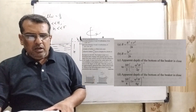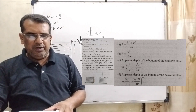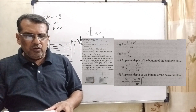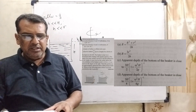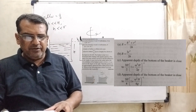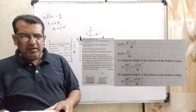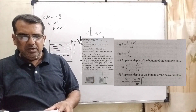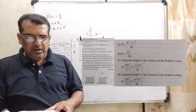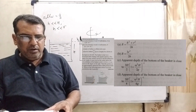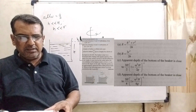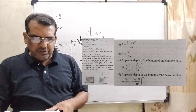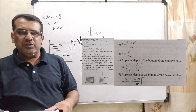Now here is the question. A beaker of radius small r is filled with water of refractive index 4/3 up to a height capital H, as shown in the figure. The beaker is kept on a horizontal table rotating with angular speed omega. This makes the water surface curve so that the difference in height of the water level at the center and at the circumference of the beaker is small h, where small h is much less than capital H, and small r is much less than capital R. Take this surface to be approximately spherical with radius of curvature capital R. This is a multiple correct choice question from JEE Advanced 2020, and small g is the acceleration due to gravity.